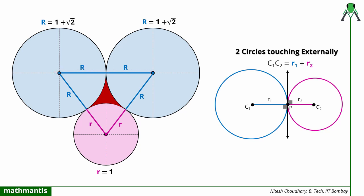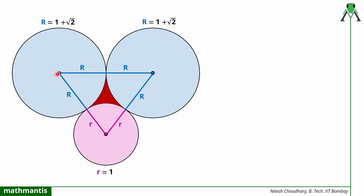Now we can see this figure forms a triangle. To define the perimeter of this red area, if somehow I can define the angles at the center of these circles, the perimeter will be defined by these arc lengths which I can add to get the final answer. To define this angle, I will draw a point and join it with the vertex of the triangle.